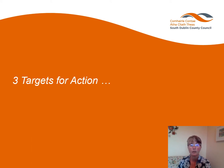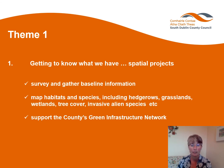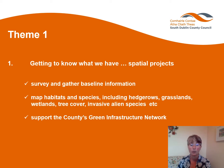The draft plan outlines three main targets of action. The first target or theme is 'getting to know what we have.' If we are to put an effective plan of action in place, we need to know exactly what we have in the county. These will be spatial projects — surveying and gathering baseline information on the different types of biodiversity and where they occur. With this information, we will put together a map of all the different habitats and species, which will form the basis of the county's green infrastructure network, supporting this important objective in the County Development Plan.